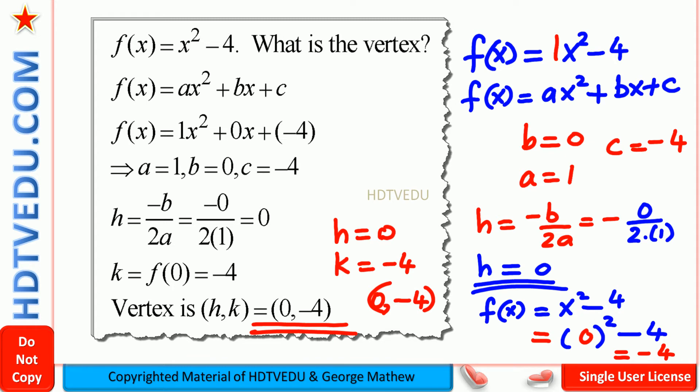To review: f(x) equals x squared minus 4. Compare it with ax squared plus bx plus c. This is a quadratic function. a is 1, b is 0 since there is no x term, and c equals negative 4. Once we have a, b, and c, then h equals negative b over 2a. Substitute b equals 0 and we get h equals 0. Substitute x equals 0 and we get k equals negative 4.